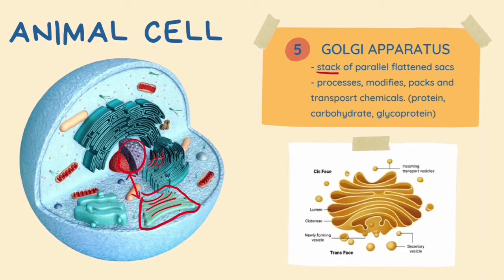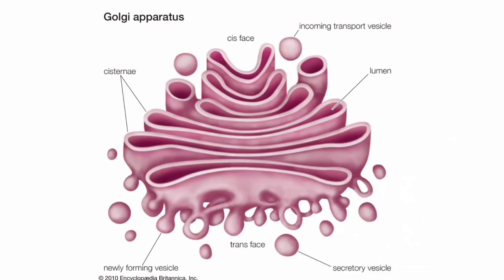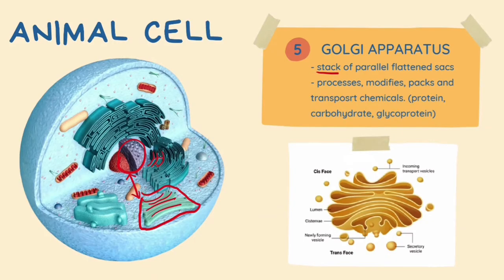Let's take a closer look at the structure of the Golgi apparatus. It has a single membrane called cisternae. There are incoming transport vesicles from the rough endoplasmic reticulum that bind to the cis face of the Golgi apparatus, and secretory vesicles that bud off from the trans face. The Golgi apparatus functions to process, modify, pack and transport chemicals such as proteins, carbohydrates and glycoproteins.